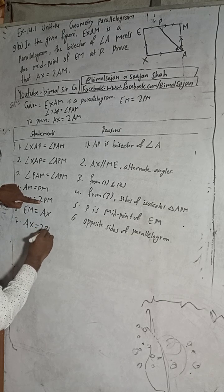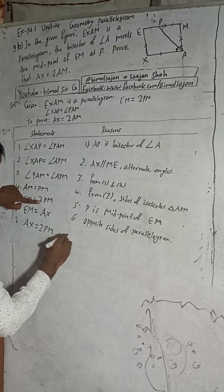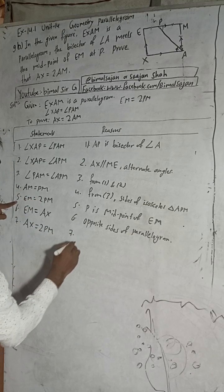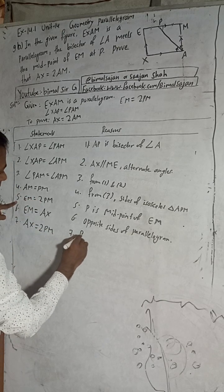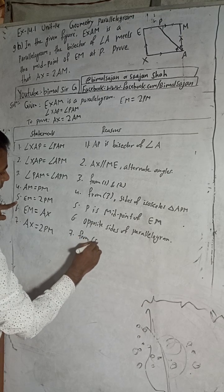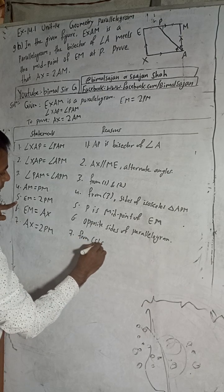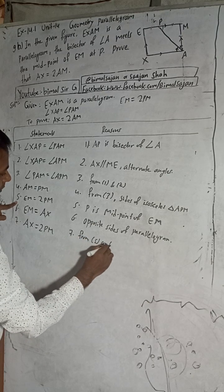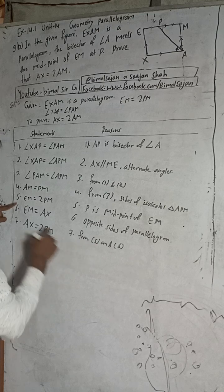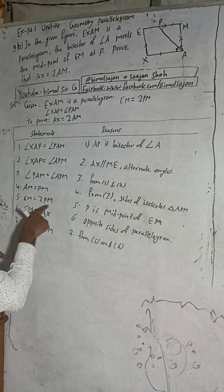From steps 5 and 6, AX equals EM equals 2PM, and since AM equals PM, we get AX equals 2AM.